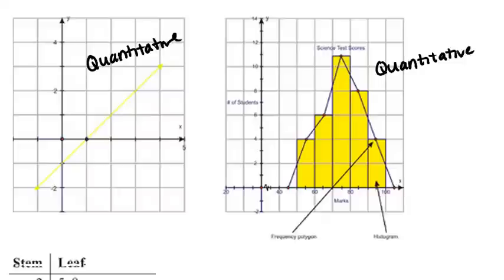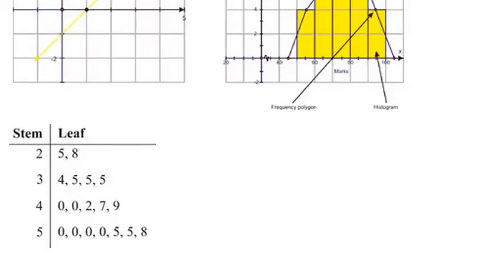And the last one is a stem and leaf plot, which is also quantitative data. The actual data is numbers, 25, 28, 34, 35, etc. So that's quantitative data.